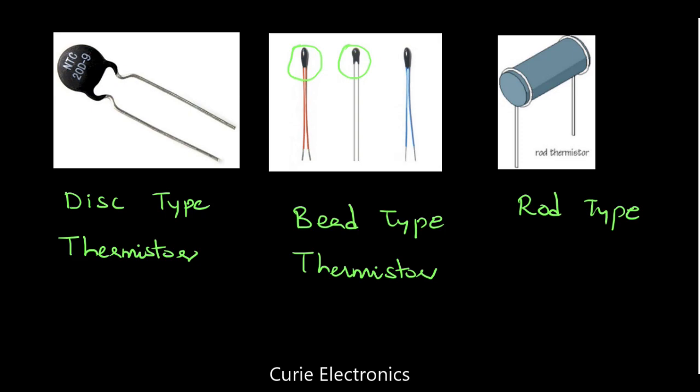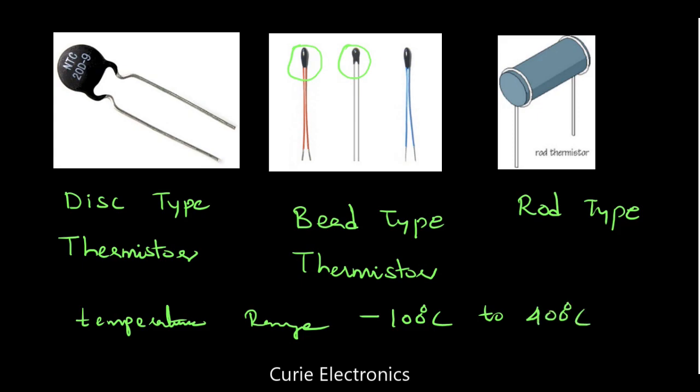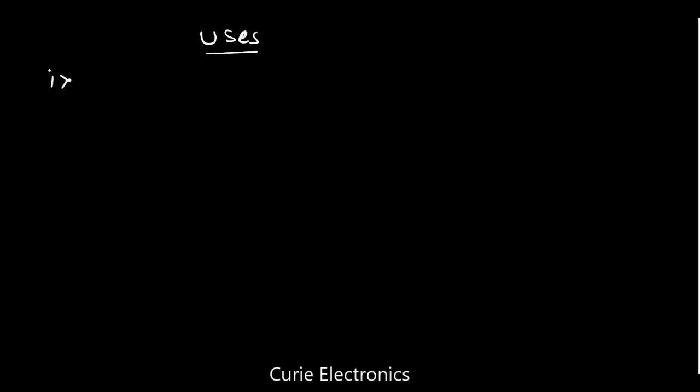Before proceeding further, why do you have to learn this? What are the applications and uses of thermistors? The temperature range of this device is usually from minus 100 degrees Celsius to 400 degrees Celsius. We should have an idea of where we are going to use it.